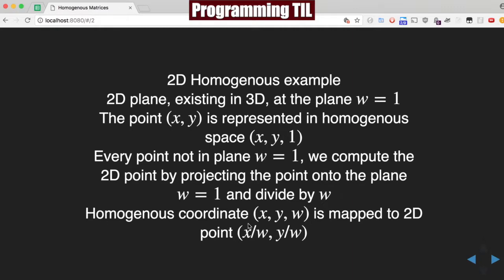So any homogeneous coordinate XYW is mapped to the 2D point X over W, Y over W. So it could be some other area or some other W value, and we can project onto that plane where W equals 1.